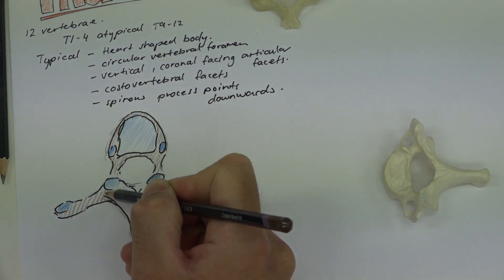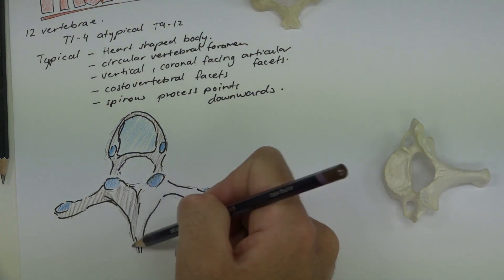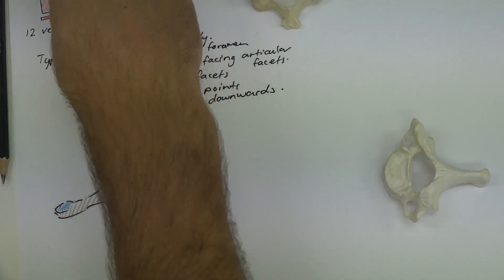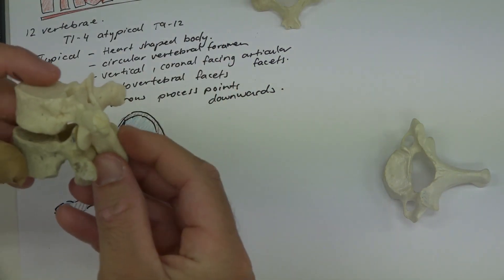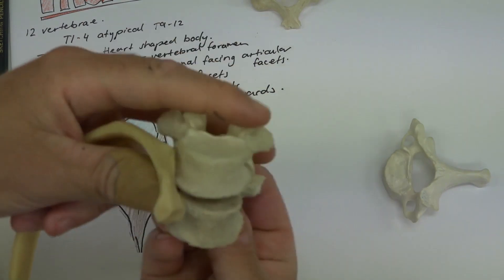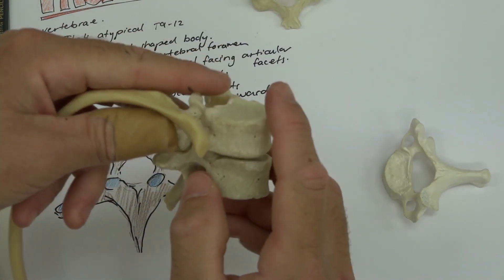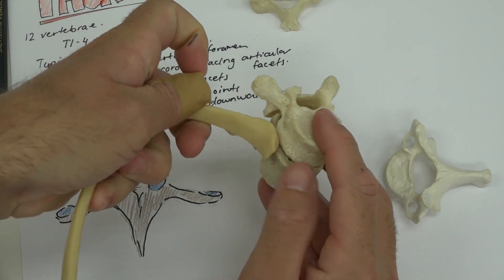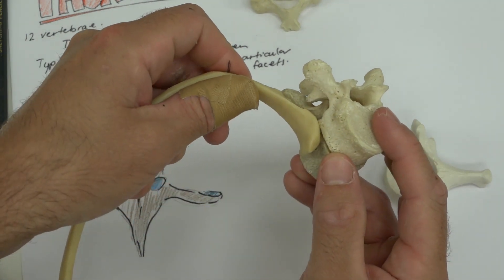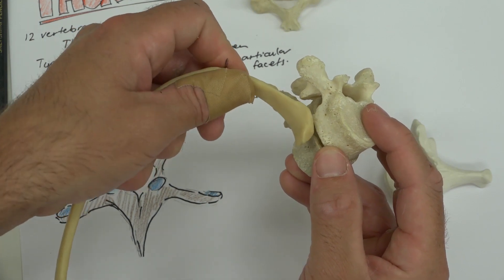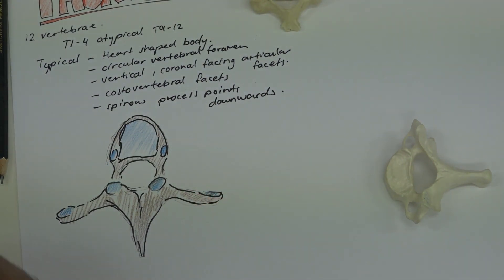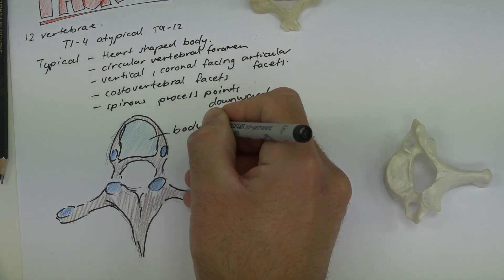Each vertebra actually has two ribs which come in contact with it — on its upper and lower body. When we bring two vertebrae together, the rib with its head articulates with the body, and the tubercle comes with the transverse process. This is how the rib articulates with the vertebra, allowing different types of motions important for inhalation and exhalation.